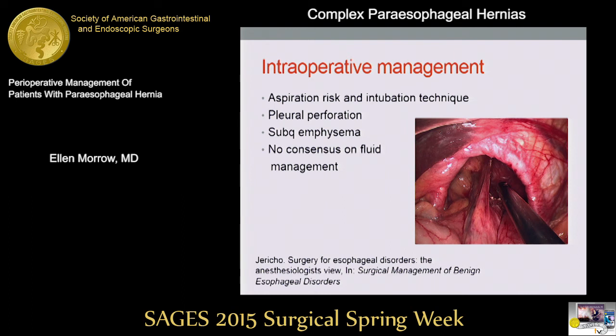Pleural perforation does occur relatively commonly in these repairs — the pleura can be quite adherent to the sac in a paraesophageal hernia. Fortunately, that's not usually a big issue. Tips to manage it and continue laparoscopically include potentially deflating the abdomen if the patient is having hemodynamic compromise, leveling the patient, repairing the pleural perforation with a suture or clip, and lowering your insufflation pressure. Drainage of the chest or chest tube is not usually required because CO2 is rapidly reabsorbed.